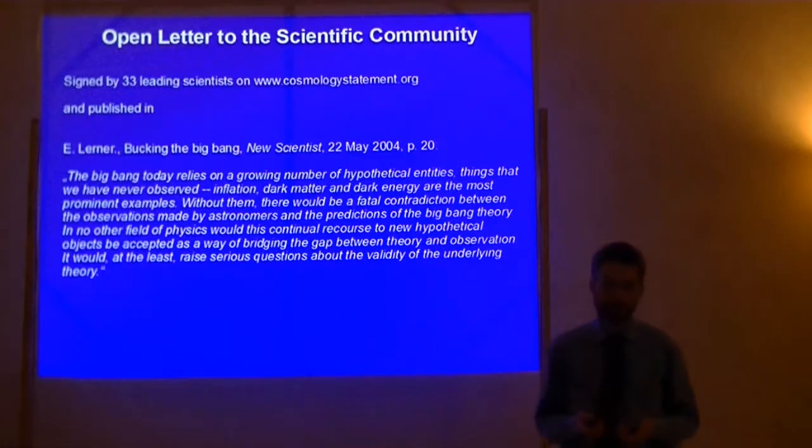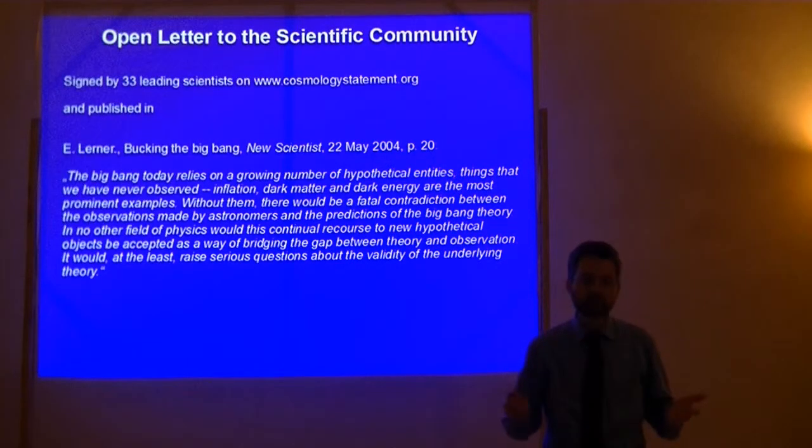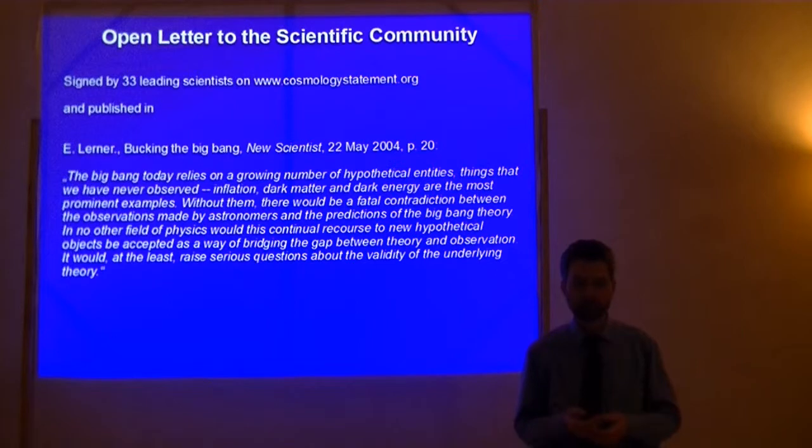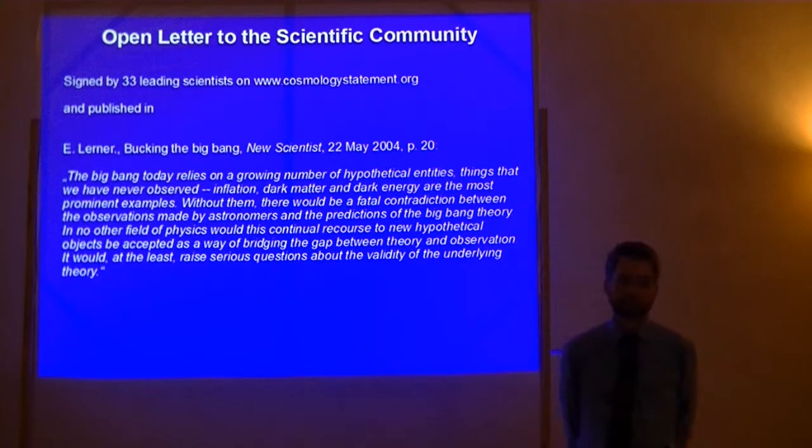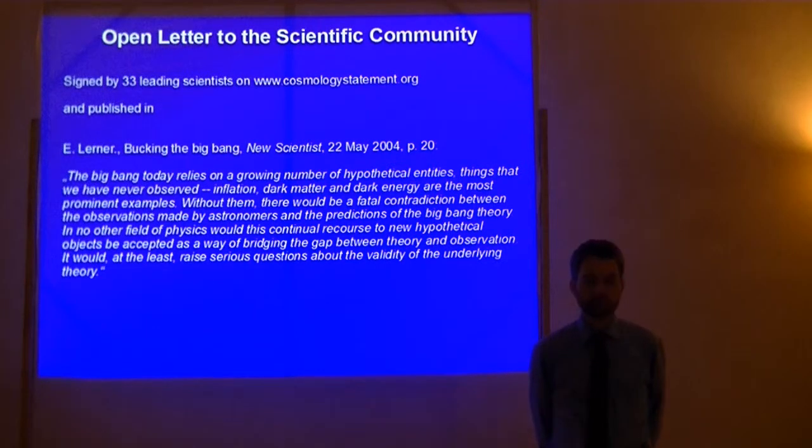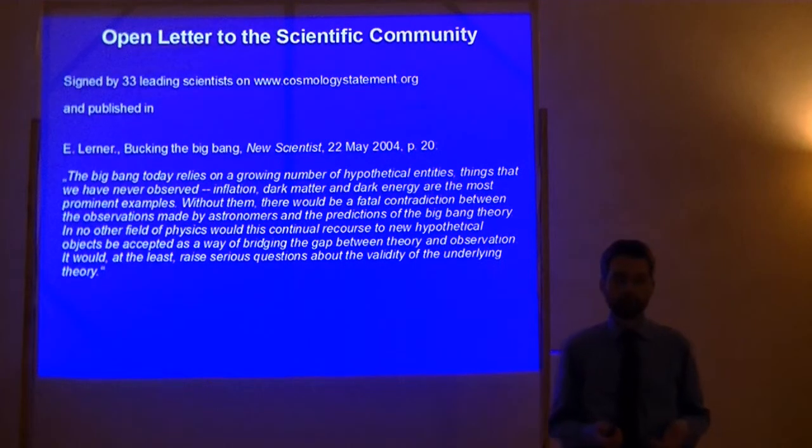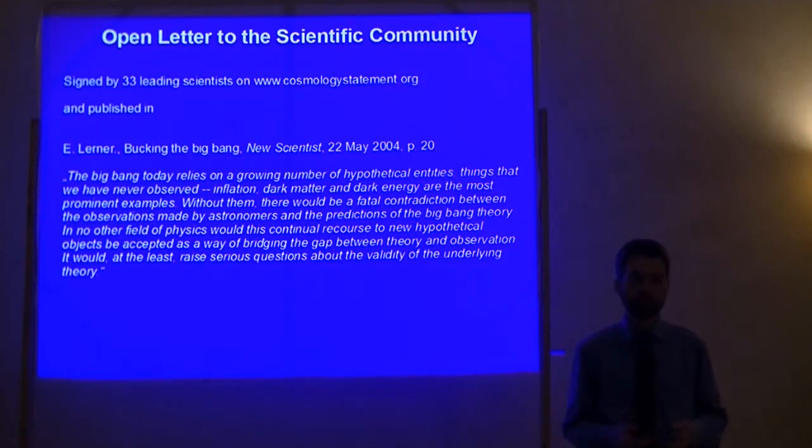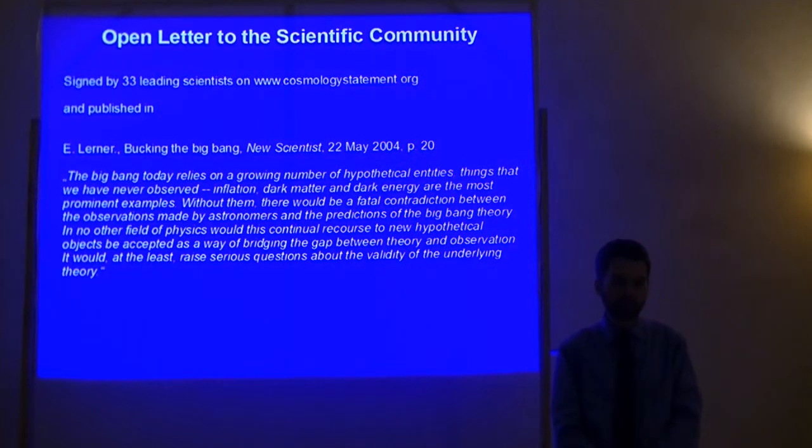Certainly, this was too much for many. 33 leading scientists published an open letter to the scientific community in the journal New Scientist in 2004, where they write the following. The Big Bang today relies on a growing number of hypothetical entities. Things that we have never observed. Inflation, dark matter, and dark energy are the most prominent examples. Without them, there would be a fatal contradiction between the observations made by astronomers and the predictions of the Big Bang theory. In no other field of physics would this continual recourse to new hypothetical objects be accepted as a way of bridging the gap between theory and observation. It would at the least raise serious questions about the validity of the underlying theory.